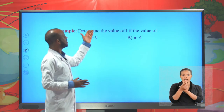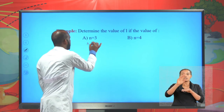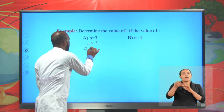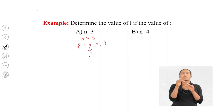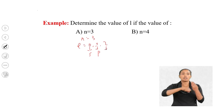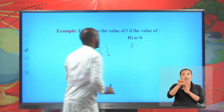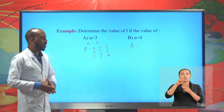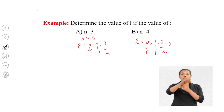Example. Determine the value of l if n = 3. The possible values of l are 0, 1, and 2: l = 0 is the s subshell, l = 1 is the p subshell, l = 2 is the d subshell. If n = 4, the possible values of l are 0, 1, 2, and 3: s, p, d, and f subshells respectively.